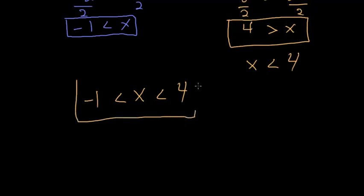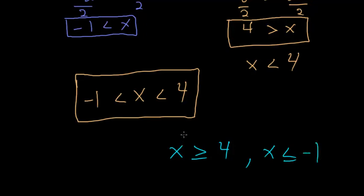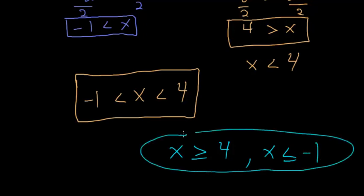This here is the solution set, but what we're looking for is an interval that does not contain the solution. So essentially any x value outside of this range. In other words, our answer would be anything x bigger than or equal to 4 and also any x value less than or equal to negative 1. So this here would be the answer to the question.